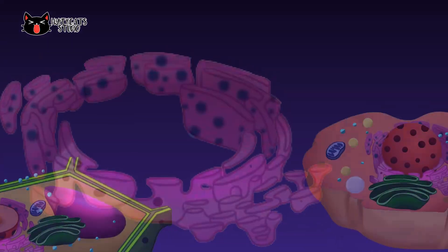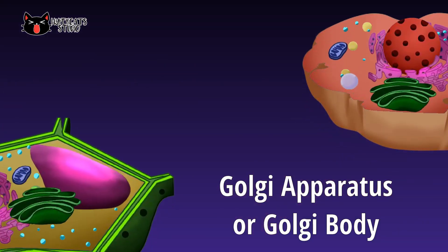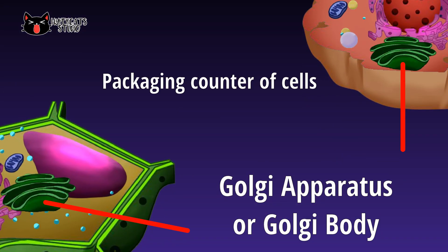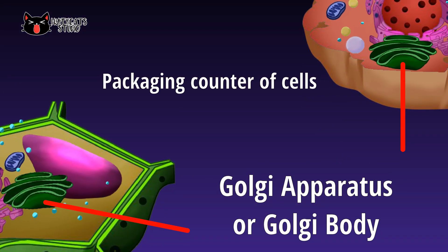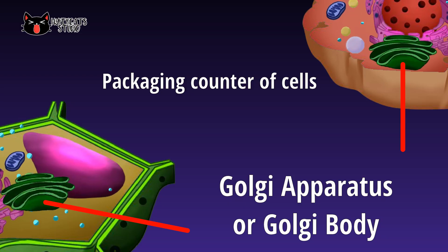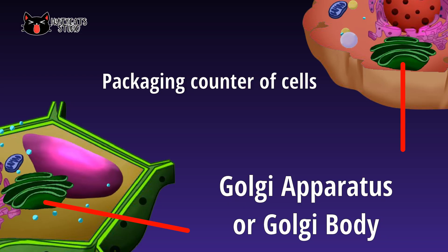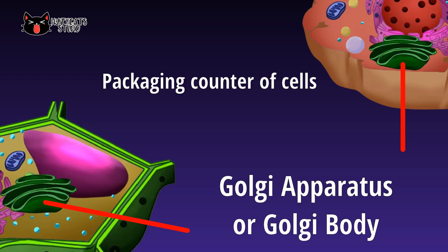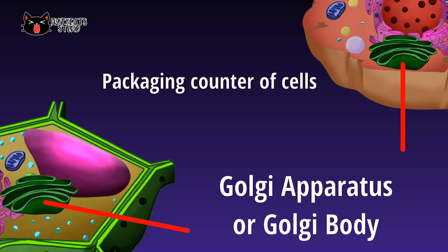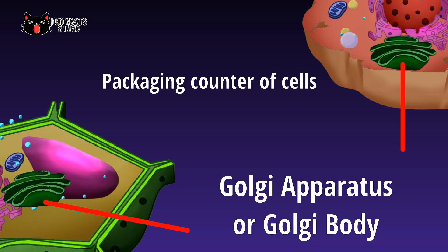The Golgi apparatus, or Golgi body, is highly folded into flattened sacs. It is known as the packaging counter of the cell because it packages secretory proteins and other products from the endoplasmic reticulum.